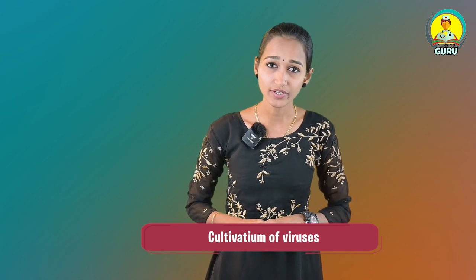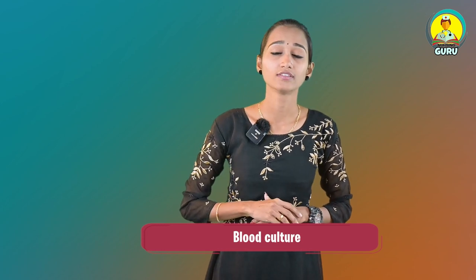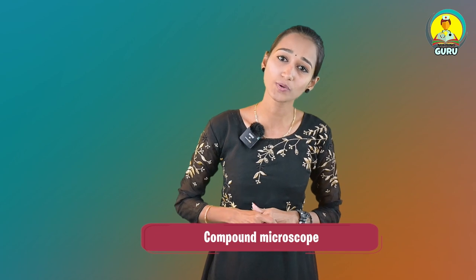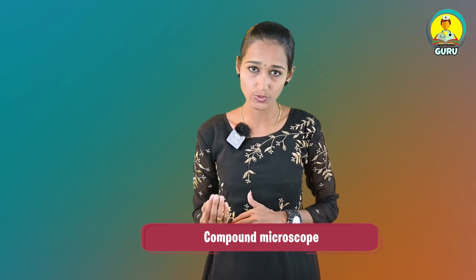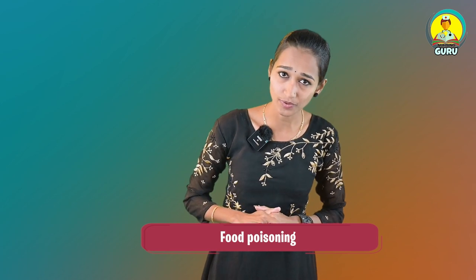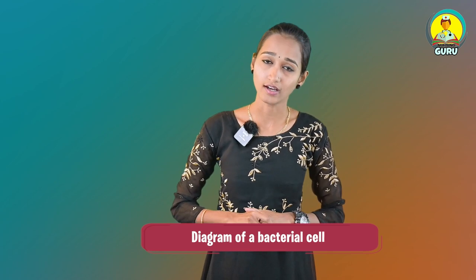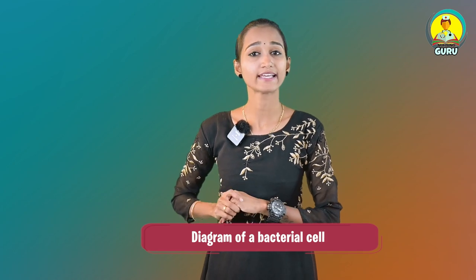Twenty-third, phagocytosis. Twenty-fourth, cultivation of viruses. Twenty-fifth, autoclave. Twenty-sixth, poliovirus. Twenty-seventh, normal flora. Twenty-eighth, Candida albicans. Twenty-ninth, rabies prophylaxis. Thirtieth question, blood culture. Next question, compound microscope. Next question, different treatment methods of biological waste. Next question, food poisoning. Another question, dermatophytes. Last question, diagram of a bacterial cell.